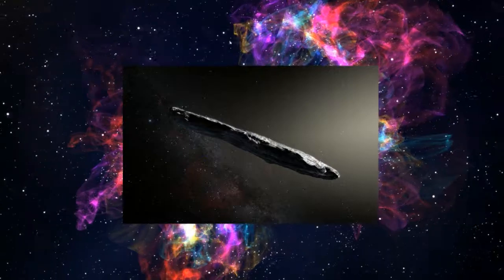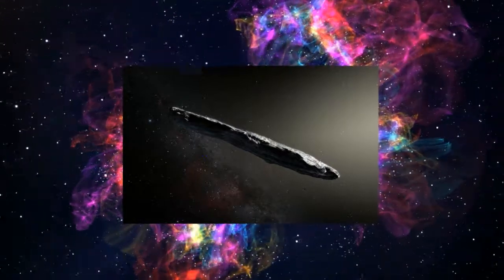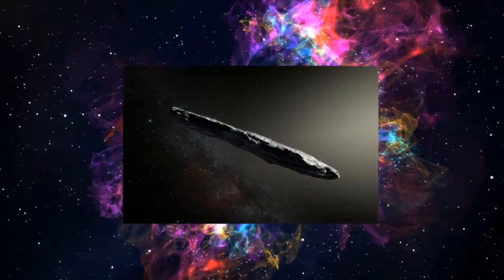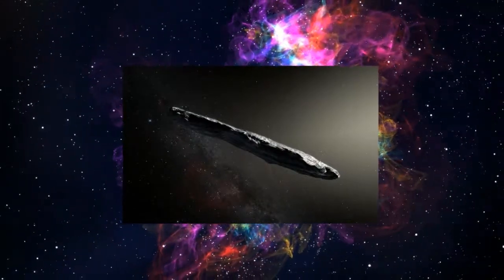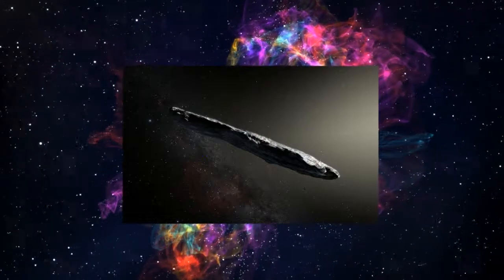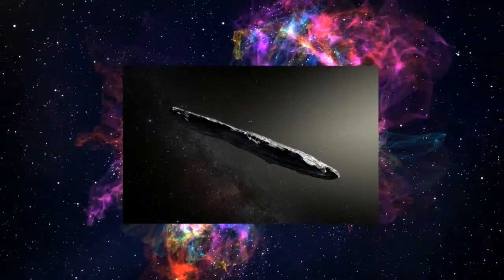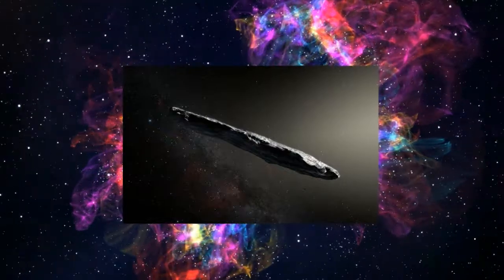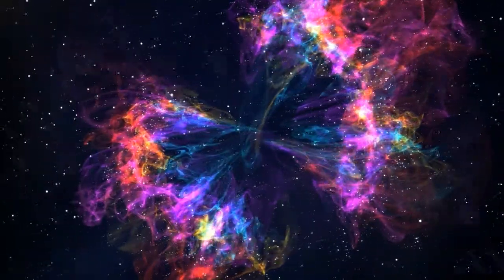Number one, its trajectory indicated it was not from within our solar system. Number two, its shape was long and cylindrical, which is not a normal naturally occurring object. Number three, this thing actually sped up on its way out of the solar system. Now, the fact that it was our first interstellar visitor was more than enough to garner headlines.